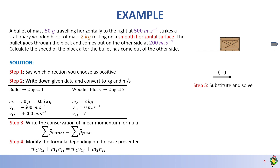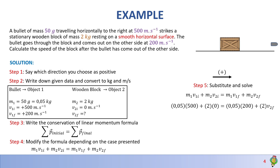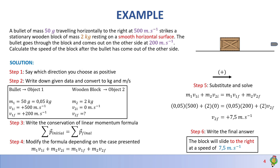Step 5: Substitute and solve. M1·V1_initial + M2·V2_initial = M1·V1_final + M2·V2_final gives: (0.05)(500) + (2)(0) = (0.05)(200) + (2)(V2_final). Solving, V2_final = 7.5 m/s. It comes out positive, so we know it's going to the right. The block slides to the right at a speed of 7.5 meters per second.